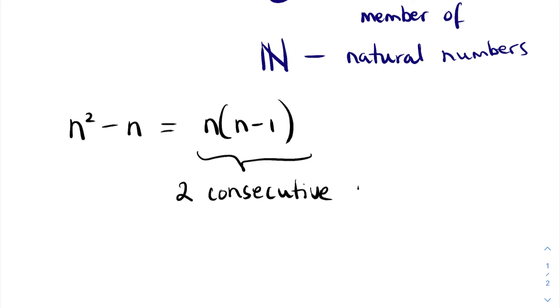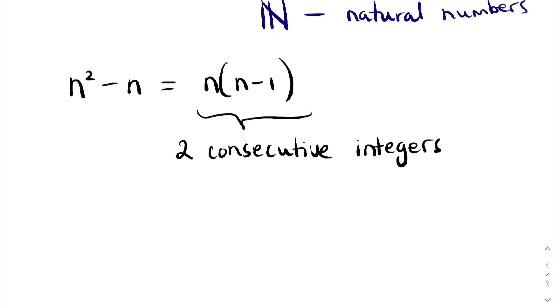What that means is they live next door to each other. If, let's say, n is 5 for instance, n minus 1 is 4, that's true for any number that you choose. And so we have two consecutive integers and we're multiplying them together, so we have the product of two consecutive integers.